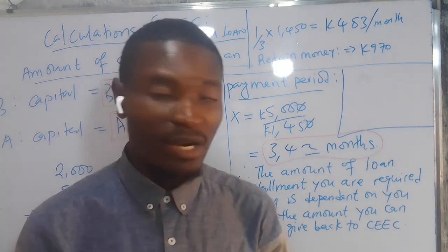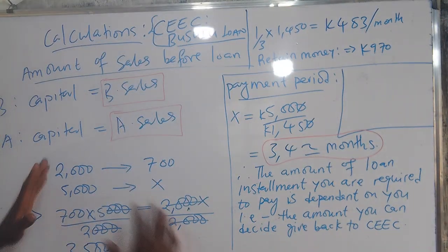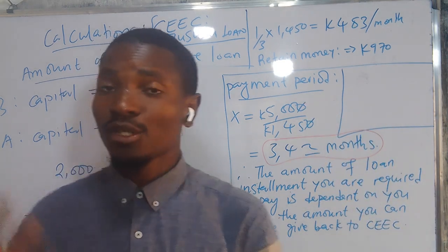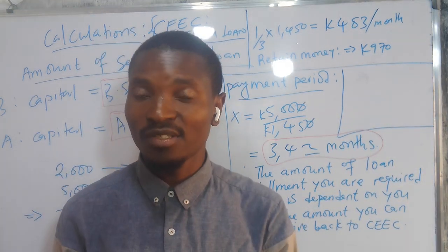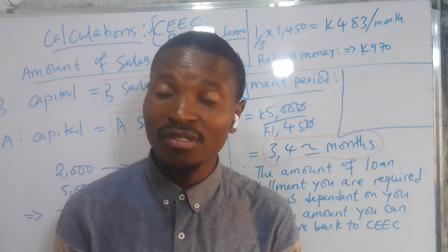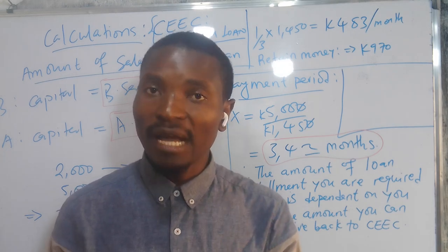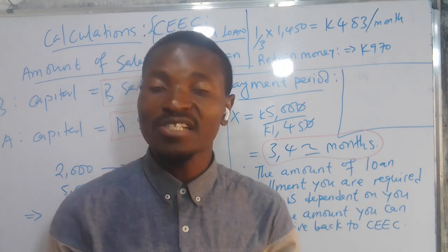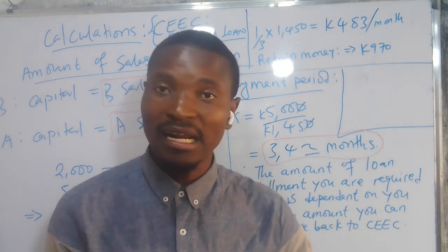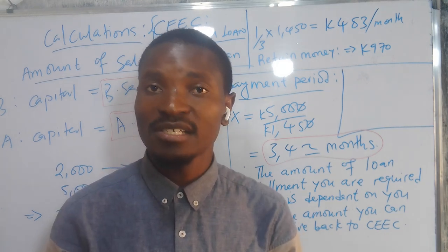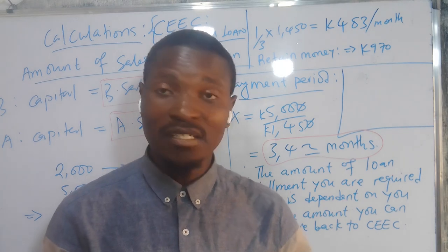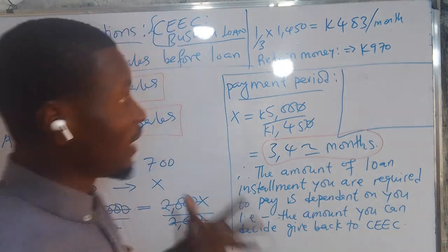Now let's jump into the calculation. We are talking about the Busulu loan, which ranges from five thousand to fifty thousand kwacha. Depending on the business you're doing, you can apply for an amount. One of the conditions given is that if you apply for more than twenty thousand, you'll be subjected to due diligence — meaning they will come on the ground, inspect your business, and assess how viable and sustainable your business is before giving you that amount.